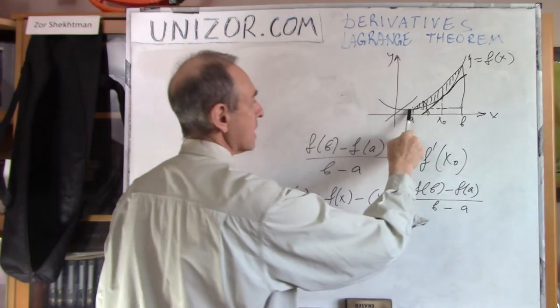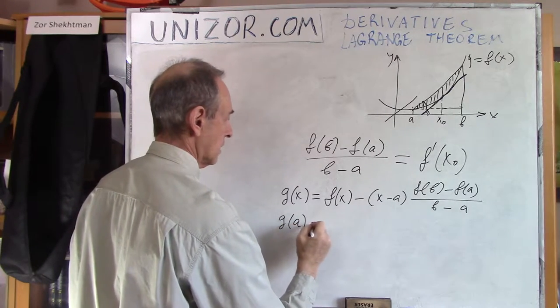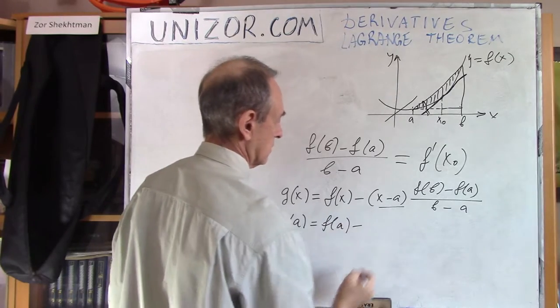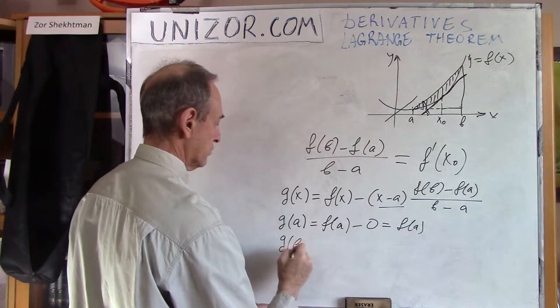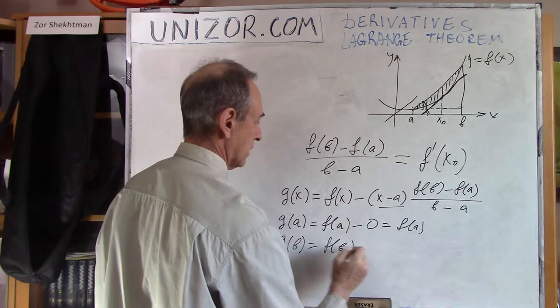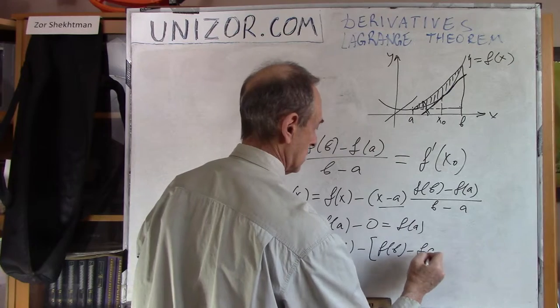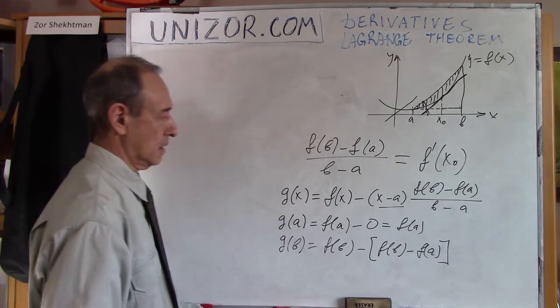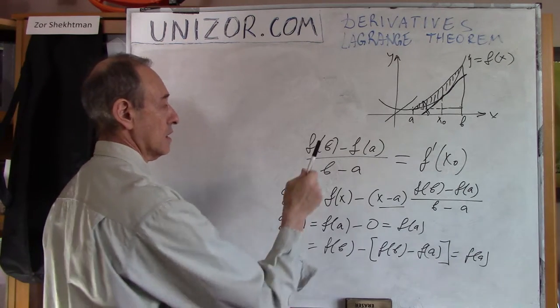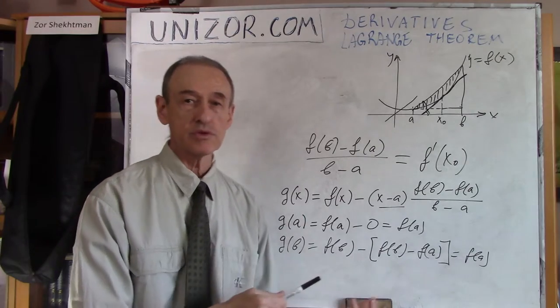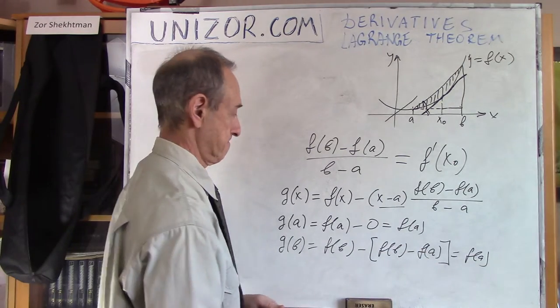And what's good about this function, it takes the same value on both ends, right? Let's just make sure that this is true. G of A is equal to F of A minus A minus A, which is 0, which is F of A. G of B is equal to F of B minus B minus A, B minus A. So, that's reduced, and that's what I have, which is also F of A. This function has the same property which we were using in the Rolle's theorem. It has the same value on both ends.